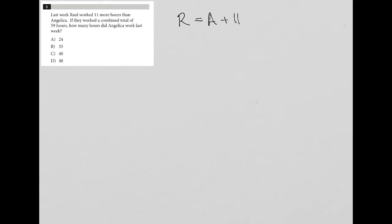Right? That's the translation of the first sentence. If they worked a combined total of 59 hours, so that means that R plus A, or Raul's hours plus Angelica's hours, were equal to 59.